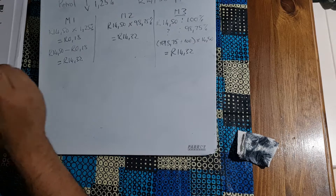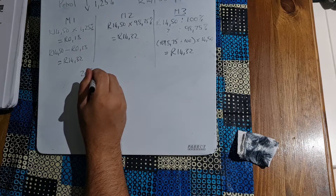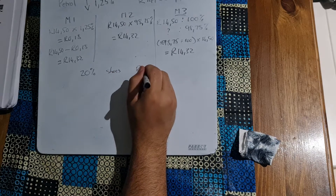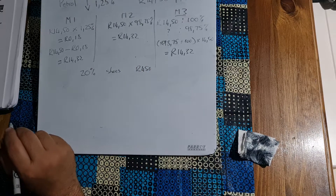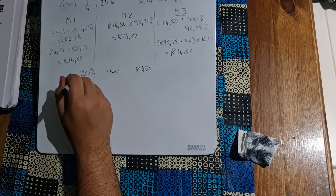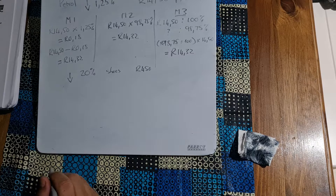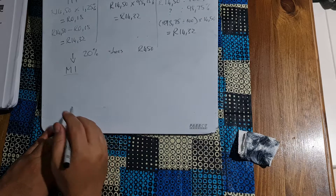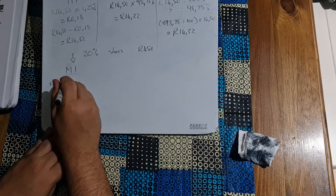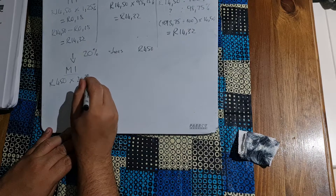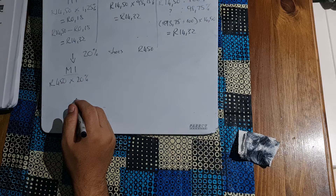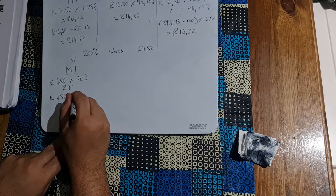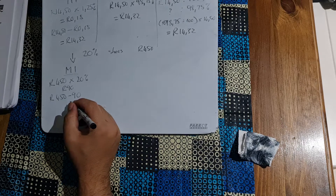Let's look at one more example: Tembi receives a 20% discount on a pair of shoes which normally sell for R450. Calculate how much Tembi will be spending. A discount means you're paying less — it's going down. Method number one: we take the original amount of R450 and multiply it by 20%, which gives us R90.